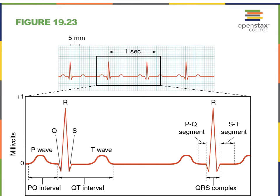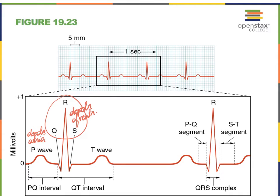Let's specify what each one of these deflection waves reflects. The P wave is a reflection of depolarization of the atria. The QRS complex looks very complex because it's the depolarization of the ventricles, and considering that the ventricles have different sized walls, we see that this QRS complex is pretty complex looking.